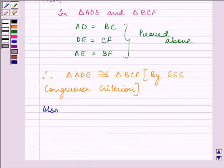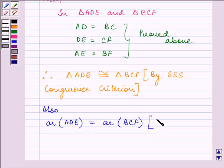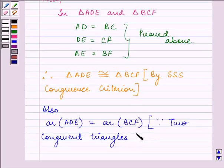Also, we can say that area of ADE will be equal to area of BCF because two congruent triangles or any two congruent figures have equal areas.